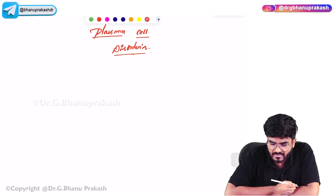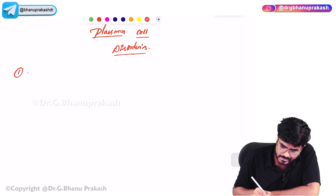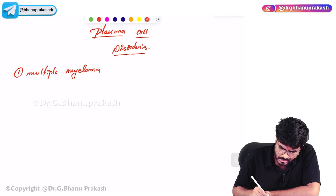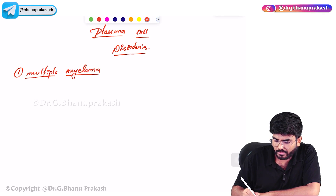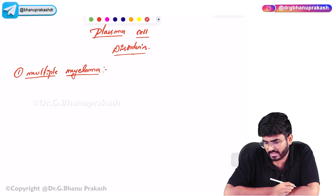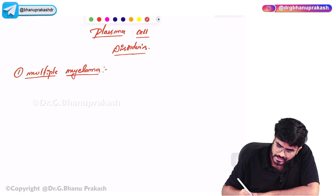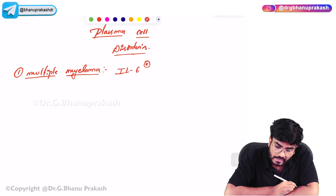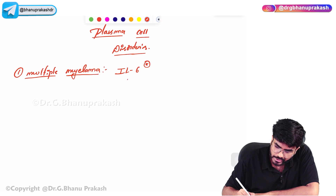The first plasma cell disorder I want to discuss is Multiple Myeloma. We don't know the exact reason why, but this condition has high levels of interleukin-6. That's the keyword — high levels of interleukin-6, which is going to stimulate plasma cell growth.